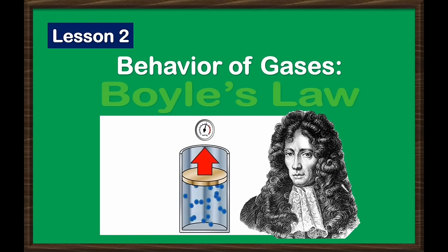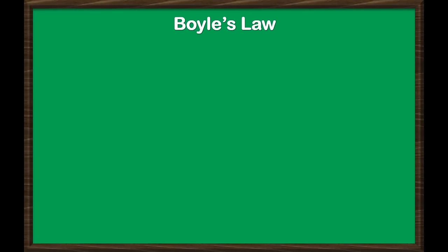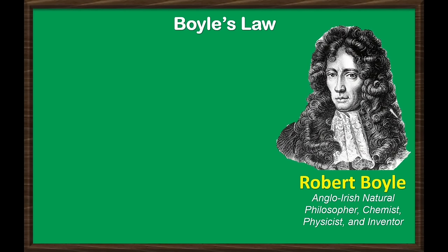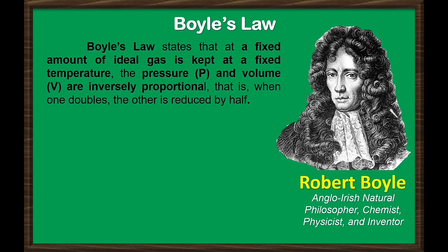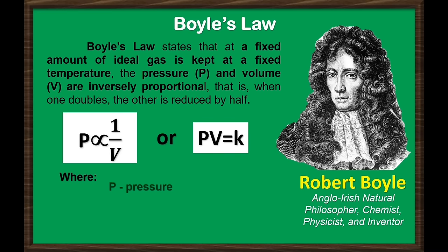Lesson 2: Behavior of Gases — Boyle's Law. In the middle of the 1600s, Robert Boyle studied the relationship between the pressure and the volume of a confined gas held at constant temperature. Boyle's Law states that if a fixed amount of ideal gas is kept at a fixed temperature, the pressure and volume are inversely proportional — that is, when one doubles, the other is reduced by half.